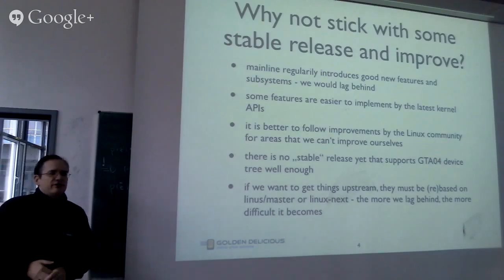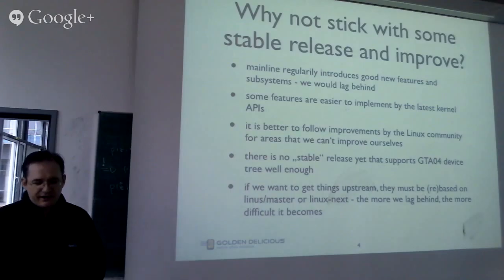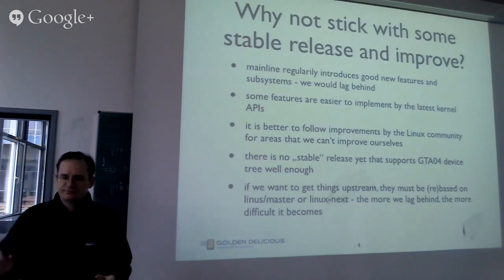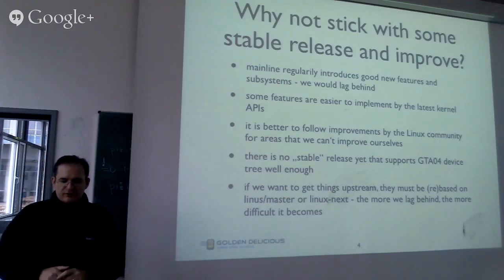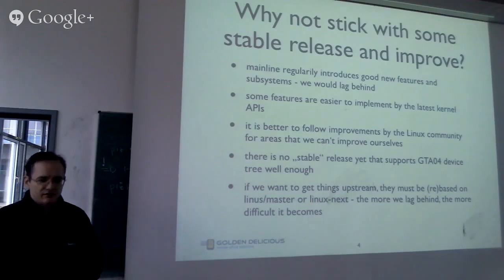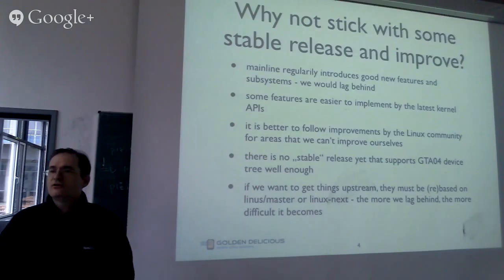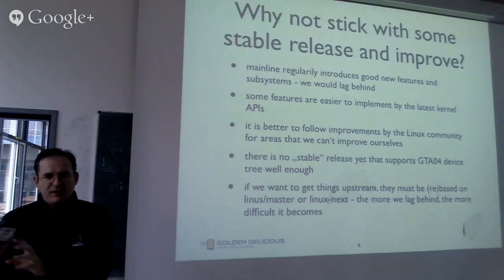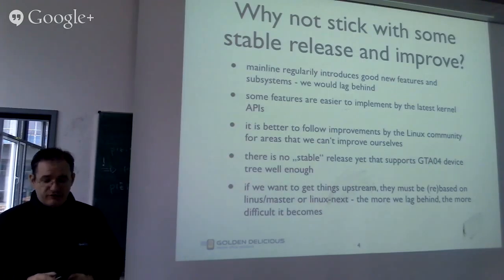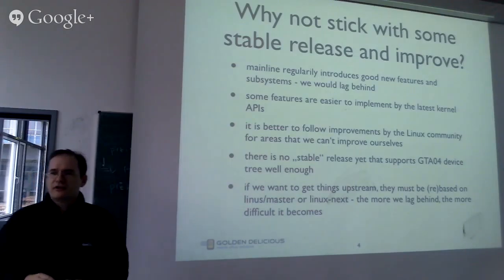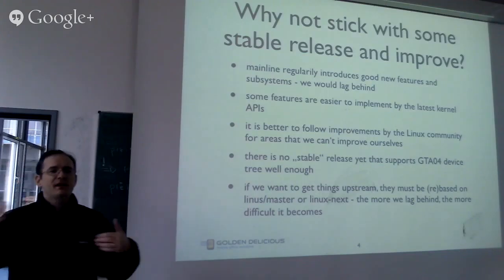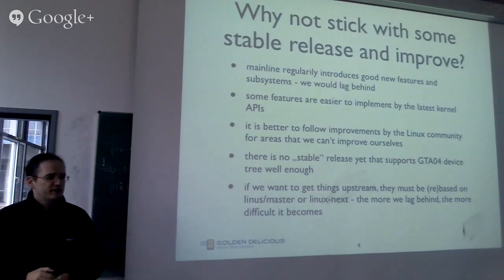We're sometimes asked: why not pick a kernel like 3.7 or 3.12 and optimize it? There are several issues with just taking a stable release and improving on it. Linux regularly introduces good new features — for example, improved power management — that we would benefit from. If we choose an older stable release, we either re-implement those improvements ourselves or stay stuck with older solutions, lagging behind Linux kernel development.